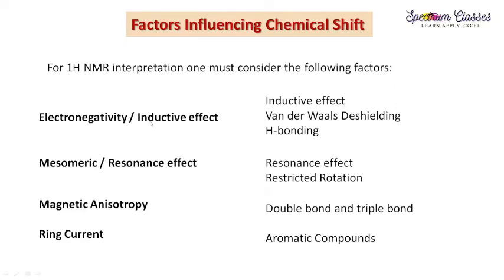The first point is electronegativity, or we can say inductive effect. But there are several exceptions related to this inductive effect. Secondly, mesomeric effect or resonance effect. The third point is magnetic anisotropy. These two terms are considered together but I have written them separately.